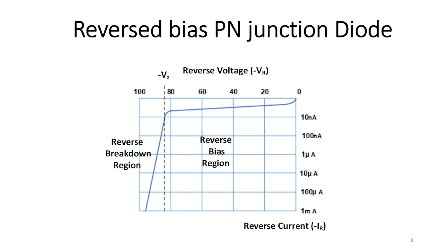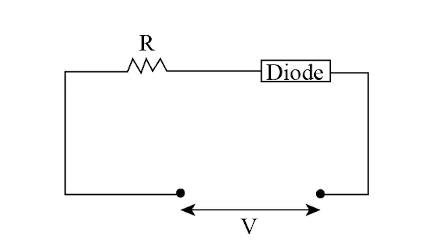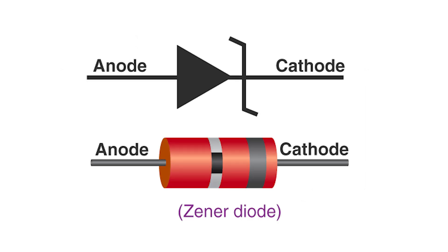On the left side, we see the reverse breakdown region. Sometimes this avalanche effect has practical applications in voltage stabilizing circuits. For that, a series limiting resistor is used with the diode to limit this reverse breakdown current to a preset maximum value, thereby producing a fixed voltage output across the diode. This type of diode is commonly known as Zener diode.